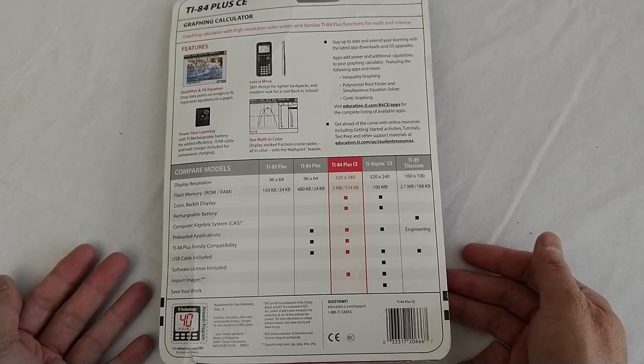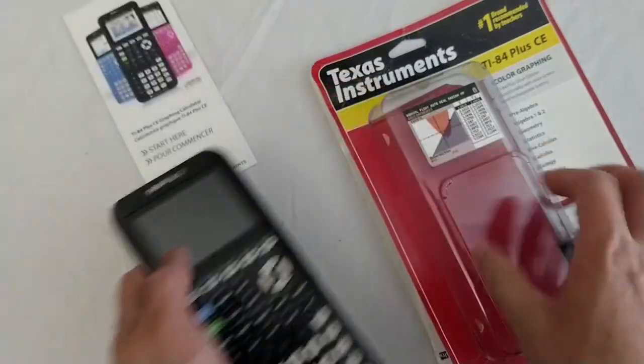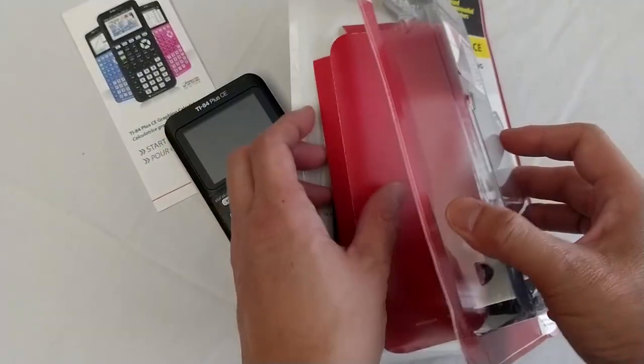The model number is TI-84 Plus CE. In most cases, you will start to need to use this type of calculator when you enter junior high school and continue to use it for high school math classes too.